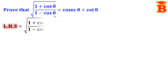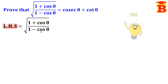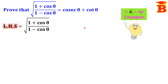Let us take the left hand side and then we will prove the right hand side. The LHS is equal to the square root of (1 plus cos theta) divided by (1 minus cos theta). Here in the denominator we have 1 minus cos theta, so the idea is we have to multiply and divide by the conjugate. The conjugate of this denominator is 1 plus cos theta.